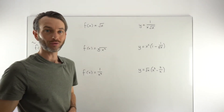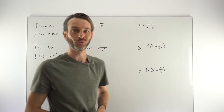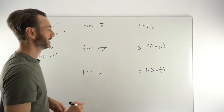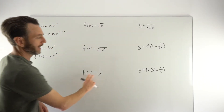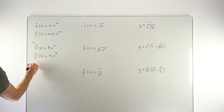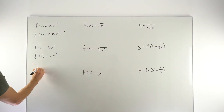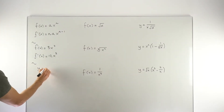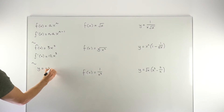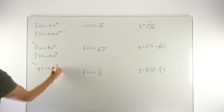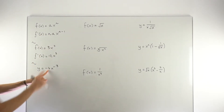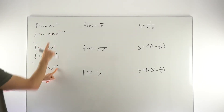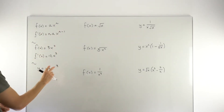Remember that the power rule — in fact all differentiation rules — are not influenced by whether your function is given as F of X or Y. For example, if we had Y equals minus 4X to the power of minus 3, it's still in the correct format, even though our A value and our power N are negative numbers.